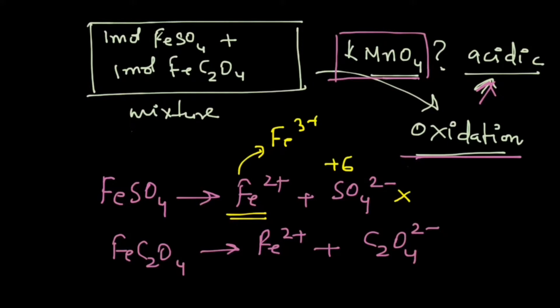We have another Fe2+ ion, so we have 2 moles of Fe2+ both of which can get oxidized, and then we have this oxalate ion C2O4 2-. This can get oxidized to carbon dioxide. So overall in this mixture we will have 2 moles of Fe2+ ions to oxidize and 1 mole of C2O4 2-.